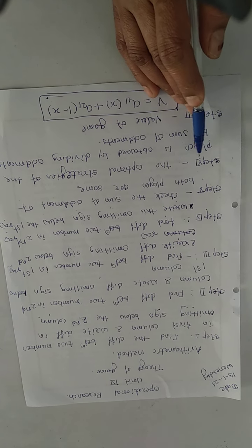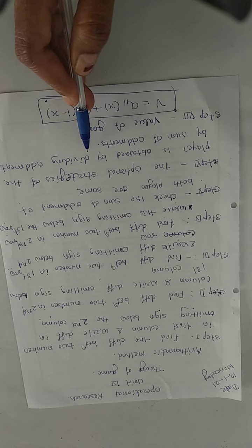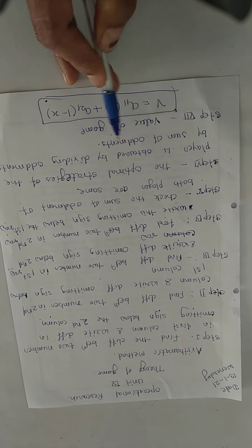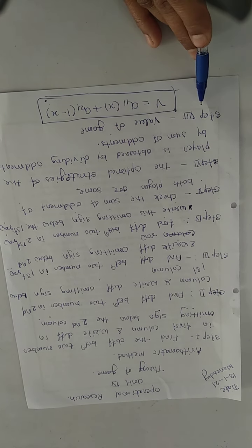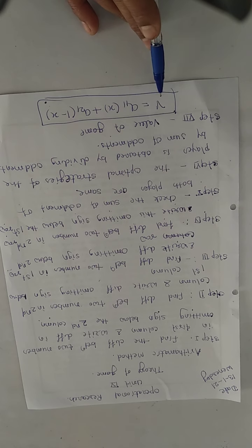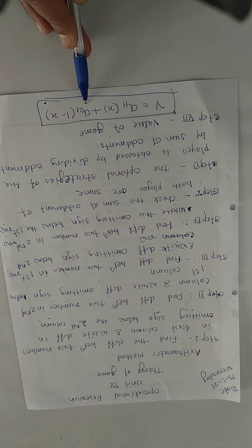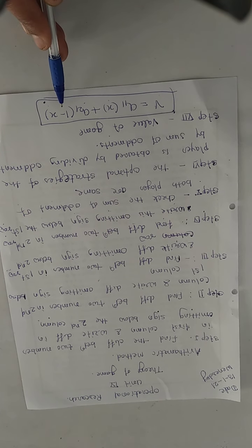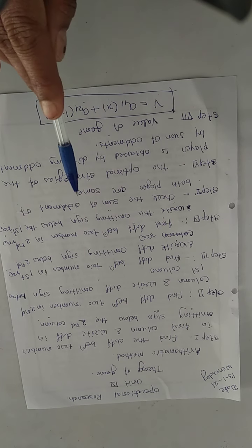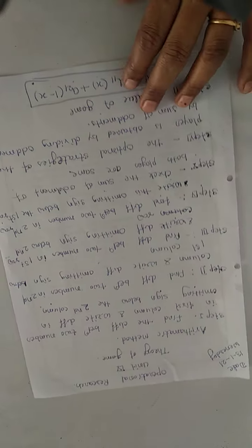Step 6: The optimal strategy of the player is obtained by dividing the argument by the sum of arguments. Step 7: The value of game phi is equal to A11 times x plus A21 times (1 minus x). This is the algorithm of the Arithmetic Method. Then we see an example.